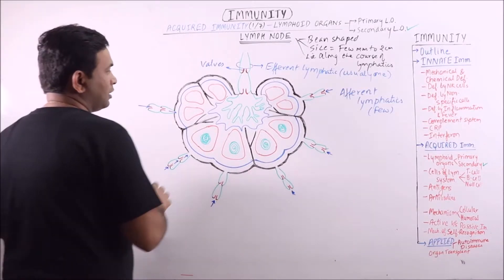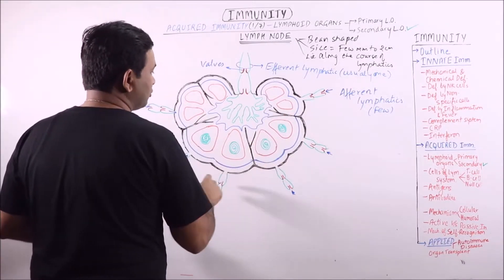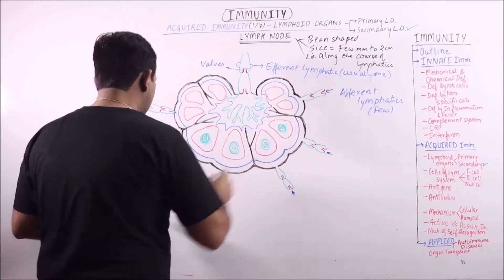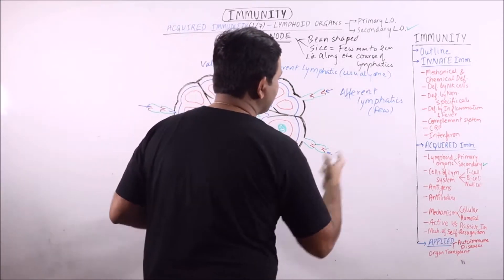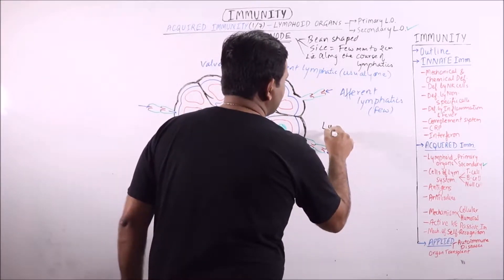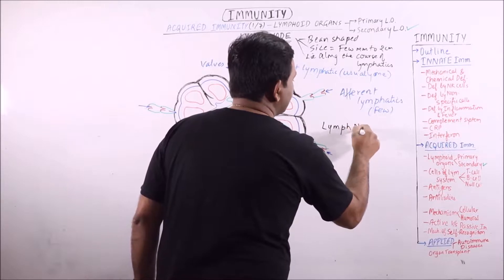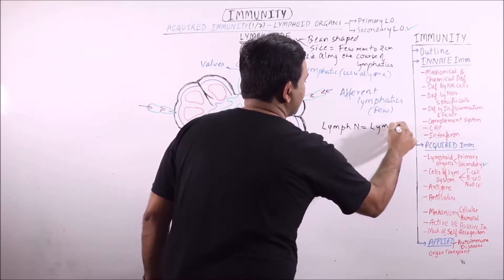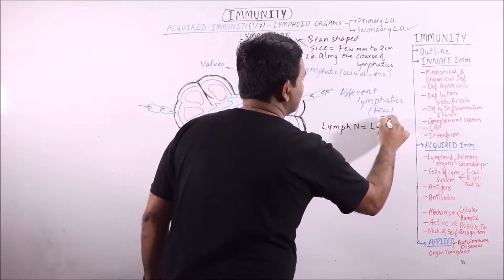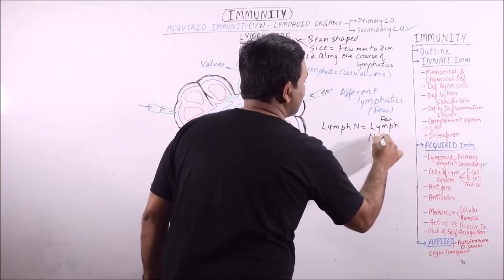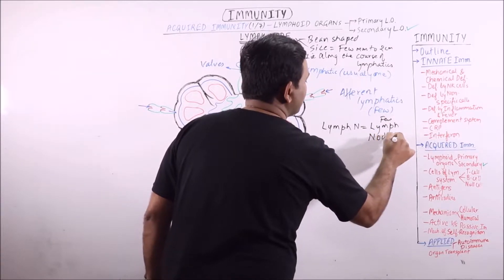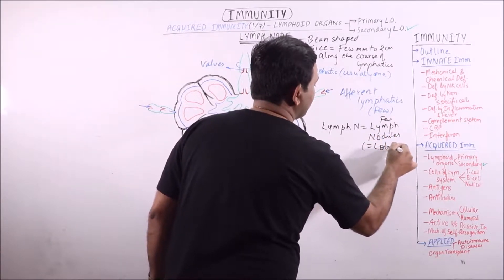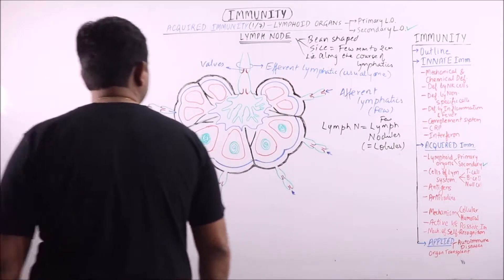If we observe the lymph node, there are some divisions known as lymph nodules. A lymph node has a few lymph nodules, which can also be considered as lobules of the lymph node.